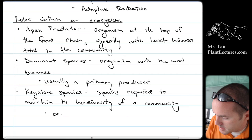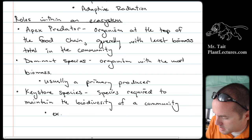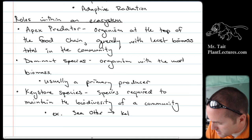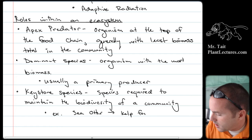The example is the sea otter in the kelp forest — just removing the sea otter will cause the overall biodiversity to go significantly down.